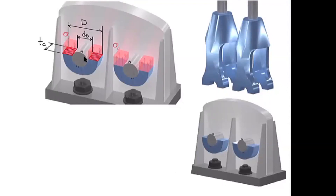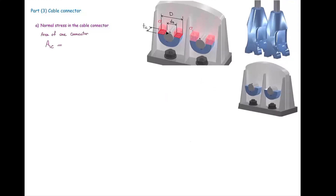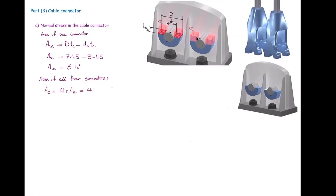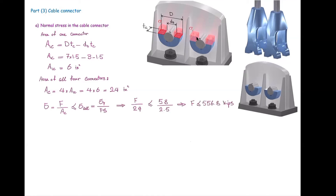The stress here is normal stress because the force is perpendicular to the cross-section area. For one connector, we take the larger rectangle with external diameter d multiplied by the connector thickness, then subtract the hole area (d_b × t_c). With four connectors total, the total area is 4 × (area of one connector). Plugging into the design equation — force / area ≤ allowable stress — and solving for force gives 556.8 kips as the force causing failure in the connector.